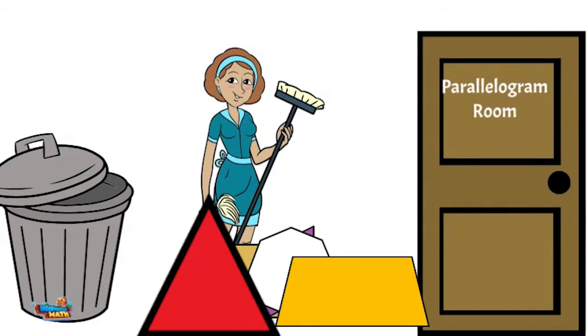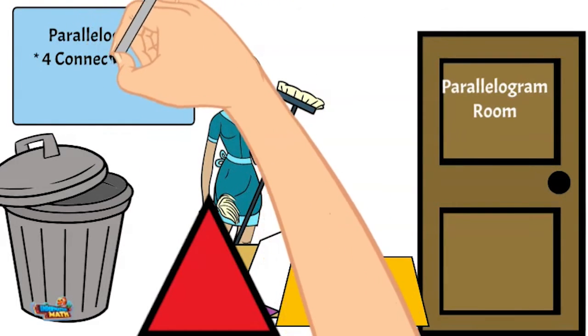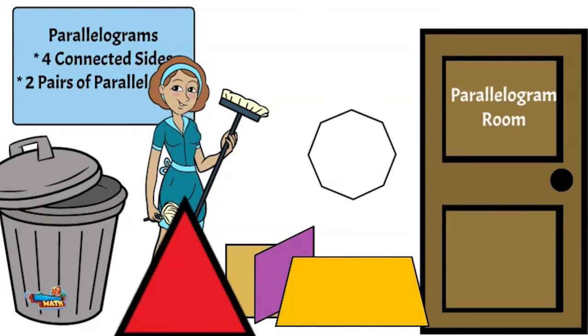The Polygon Hotel has a special room called the parallelogram room. Only parallelograms are allowed. The rest get thrown in the garbage. Before we start working, it is nice to review the attributes of a parallelogram. Parallelograms have four connecting sides. Parallelograms have two pairs of parallel sides.